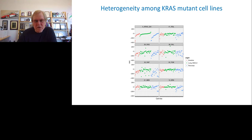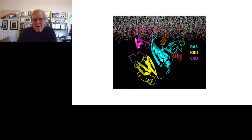Going downstream has not been an effective strategy. Therefore, we'd like to target the RAS protein directly and stop the problem at its source. The RAS protein is localized in the plasma membrane through a tail at the C-terminal region of the protein where it is prenylated, and the farnesol group locks the RAS protein into the plasma membrane.